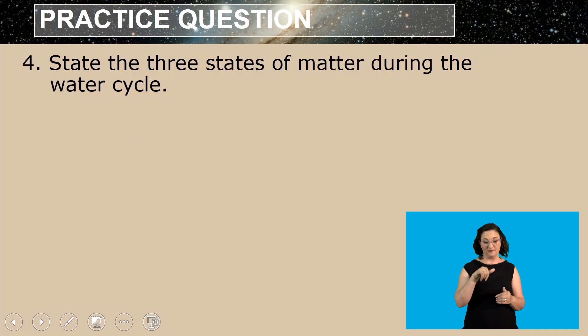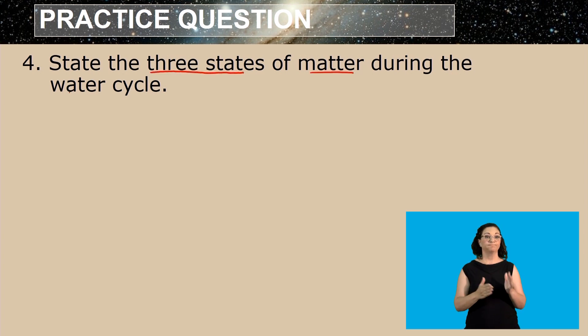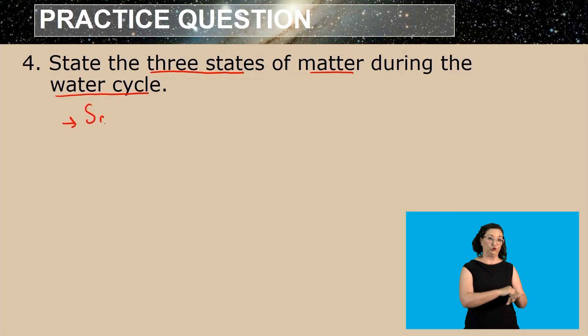Now let us go to question four. State three states of matter during the water cycle. We know that water can exist in three states during the water cycle. It can exist in solid form, and here in solid, we can say ice is an example of how water can be in a solid form.